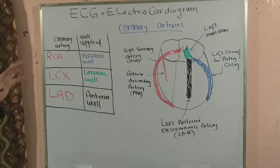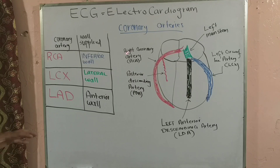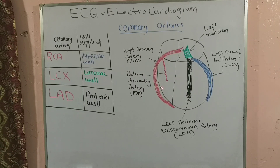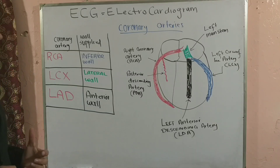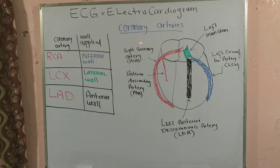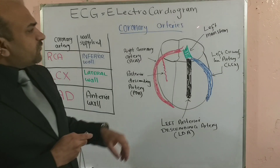This makes the right coronary artery very important, because if there is a thrombus or any problem, it can affect not only the septum and the inferior wall, but also the cardiac conduction system. Other than the right coronary artery, there is also the left main stem.